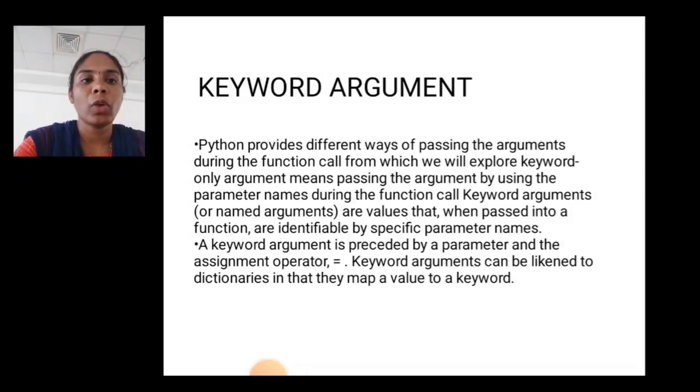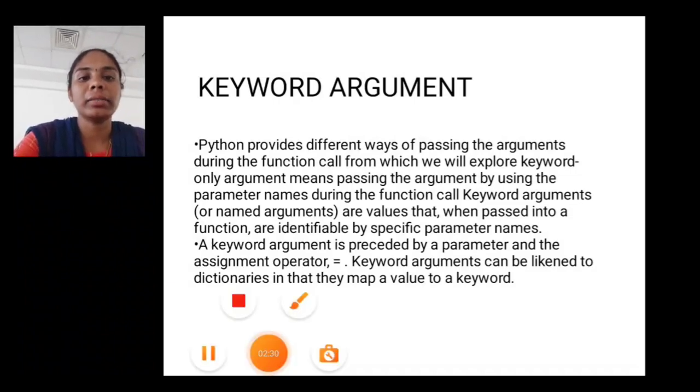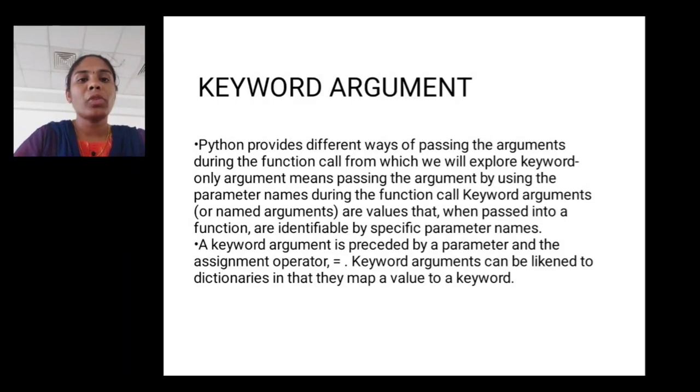Keyword arguments. Python provides different ways of passing the arguments during the function call from which we will explore keyword-only arguments. This means passing the arguments by using the parameter names during the function call. Keyword arguments or named arguments are values that when passed into a function are identifiable by specific parameter names. A keyword argument is preceded by the parameter and the assignment operator equal to. Keyword arguments can be linked into a dictionary that maps a value to a keyword.